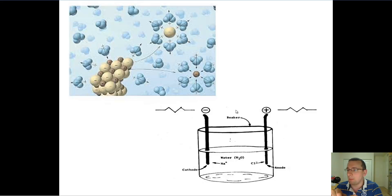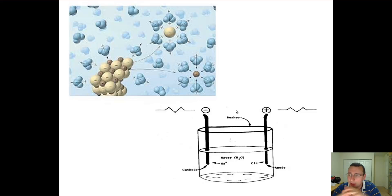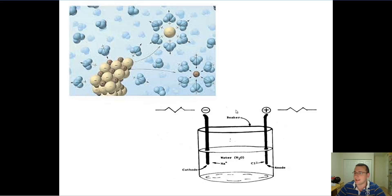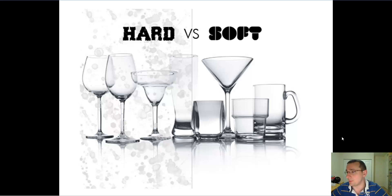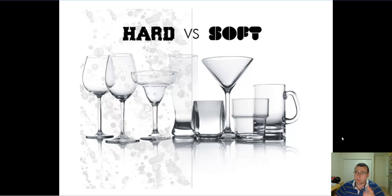Solutions that have ionic compounds which dissociate and form positive and negatively charged ions will have charged ions flowing around the water, allowing the solution to conduct electricity — these are called electrolyte solutions. Solutions without ionic compounds and without dissolved charged things are non-electrolyte solutions. There's also a classification of hard water versus soft water: any solution with metals dissolved in it — like sodium — is considered hard water, while any solution without metals is soft water.